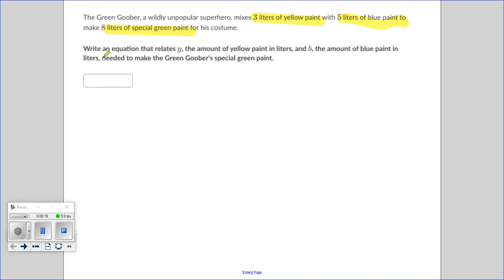For his costume, write an equation that relates Y, the amount of yellow paint in liters, and B, the amount of blue paint in liters, to make the Green Goober's special green paint.